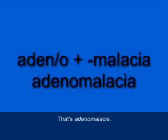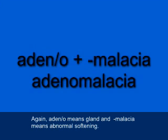What is the term for the abnormal softening of a gland? That's adenomalacia — A-D-E-N-O-M-A-L-A-C-I-A. Adeno means gland, and malacia means abnormal softening.